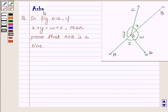Hi and welcome to the session. I am Asha, and I'm going to help you with the following question. In figure 6.16, if x plus y equals w plus z, then prove that AOB is a line.